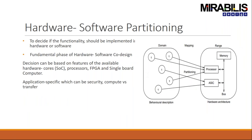Hardware-software partitioning is the process of deciding which computations are to be implemented in hardware and which in software. Application-specific hardware is much faster than software but is also significantly more expensive. Software, on the other hand, is cheaper to create and maintain but is slower. Hence, performance-critical parts should be realized in hardware and non-critical components in software, achieving a good trade-off between cost and performance.